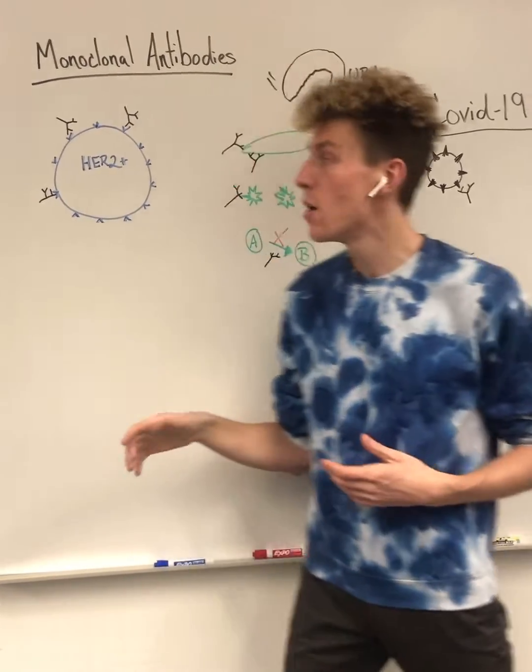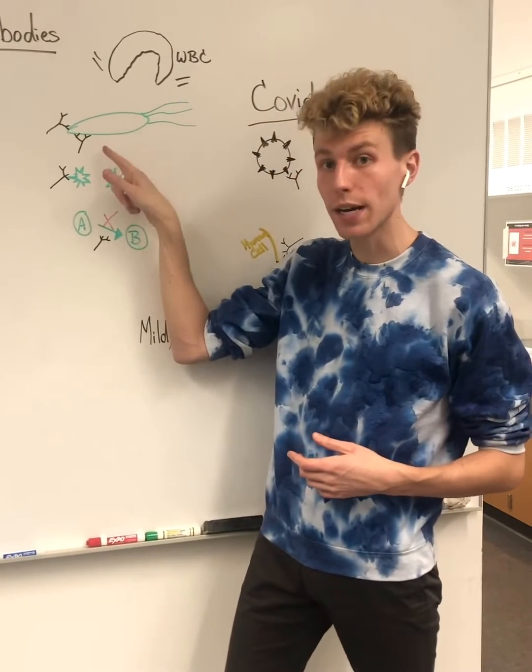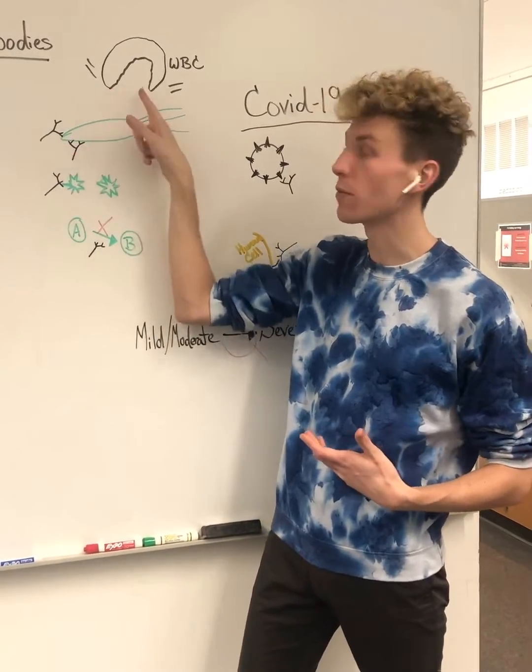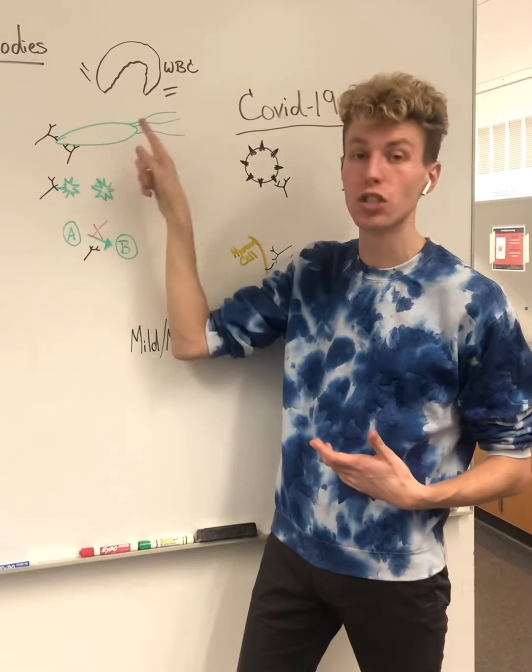But these antibodies can also be used for different pathogens. One way they can be used is to bind directly to the pathogen and slow it down. They can also serve as a beacon to recruit a white blood cell to come and destroy that pathogen.